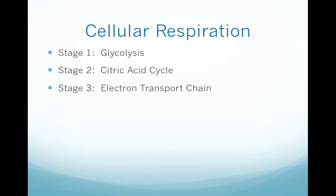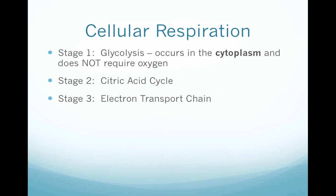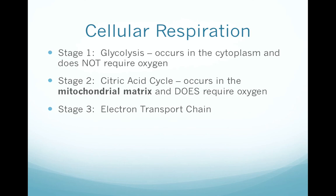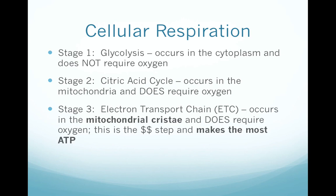Cellular respiration occurs in three stages. Stage one is glycolysis, which occurs in the cytoplasm and does not require oxygen — it's actually the only part of cellular respiration that does not require oxygen. Stage two is the citric acid cycle, which occurs in the mitochondrial matrix and does require oxygen. Stage three is the electron transport chain (ETC), which occurs on the mitochondrial cristae and also requires oxygen. This is the money step — the step that makes the most ATP. Make sure you can recall the three stages, where they occur, and whether they require oxygen.